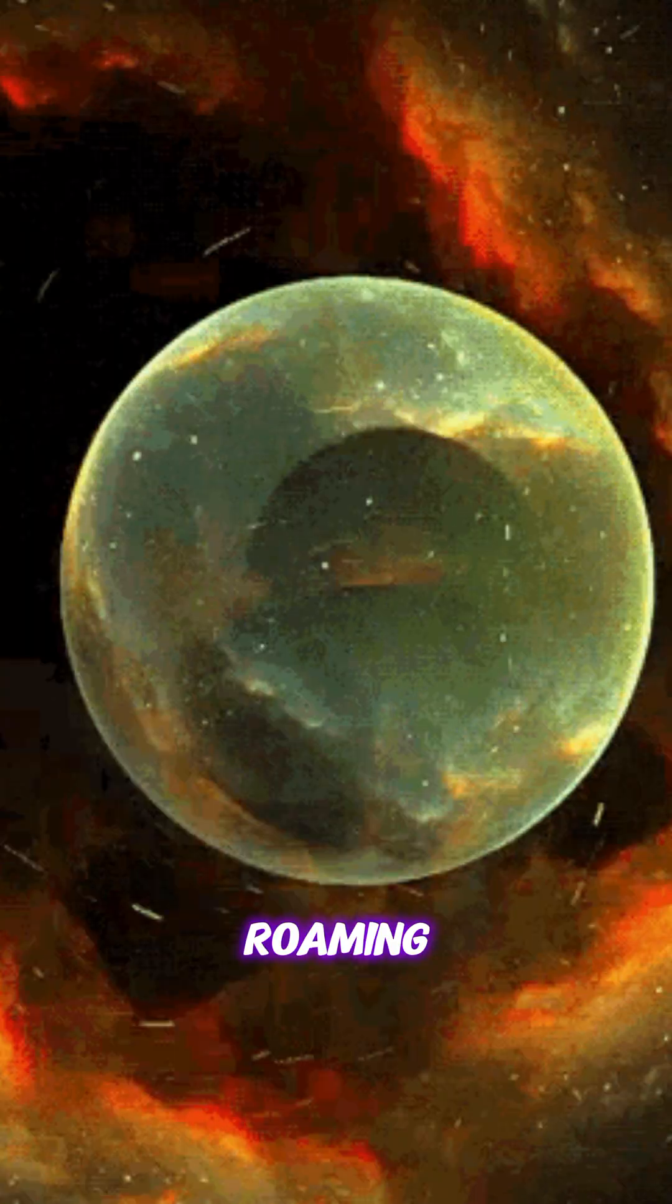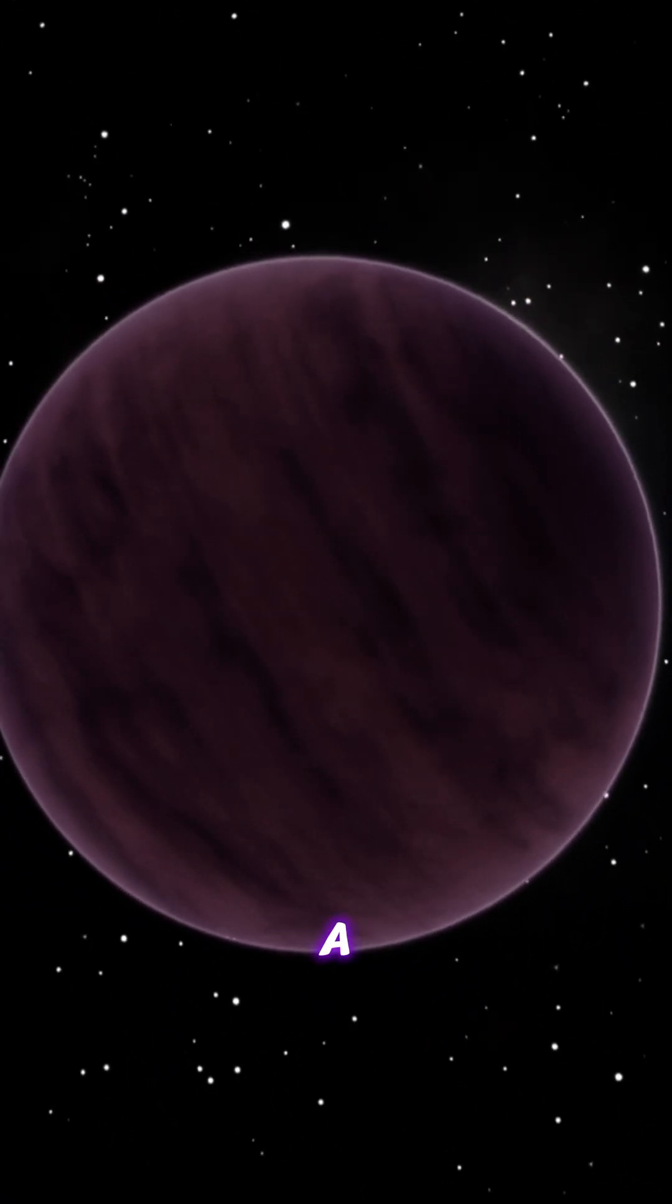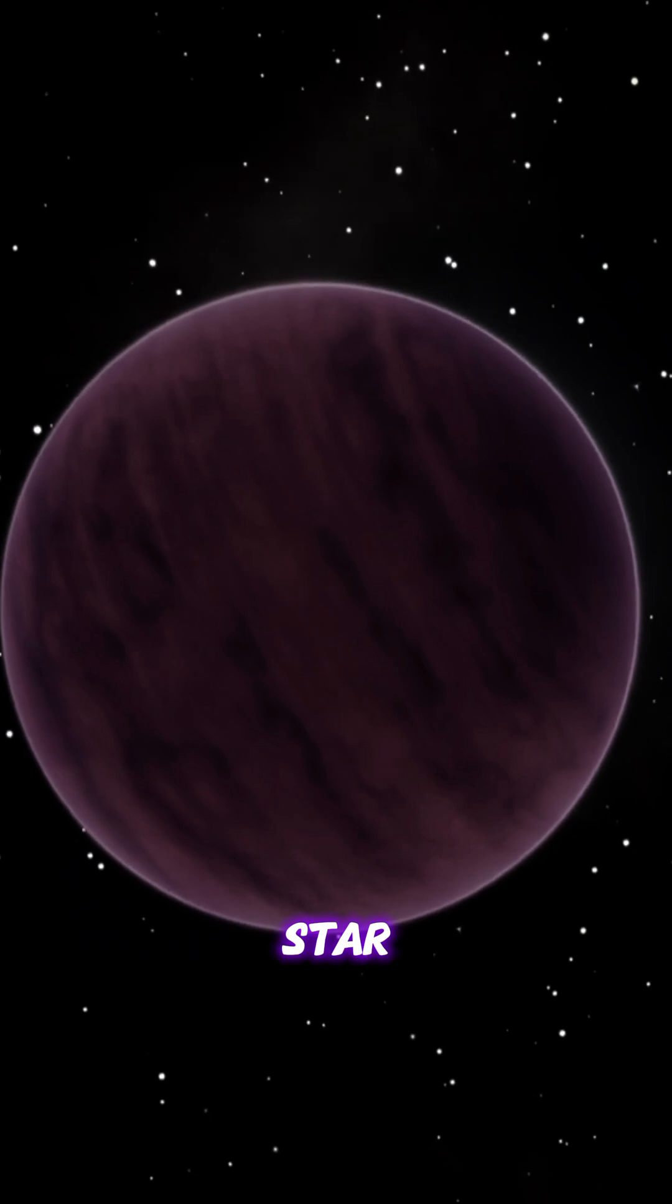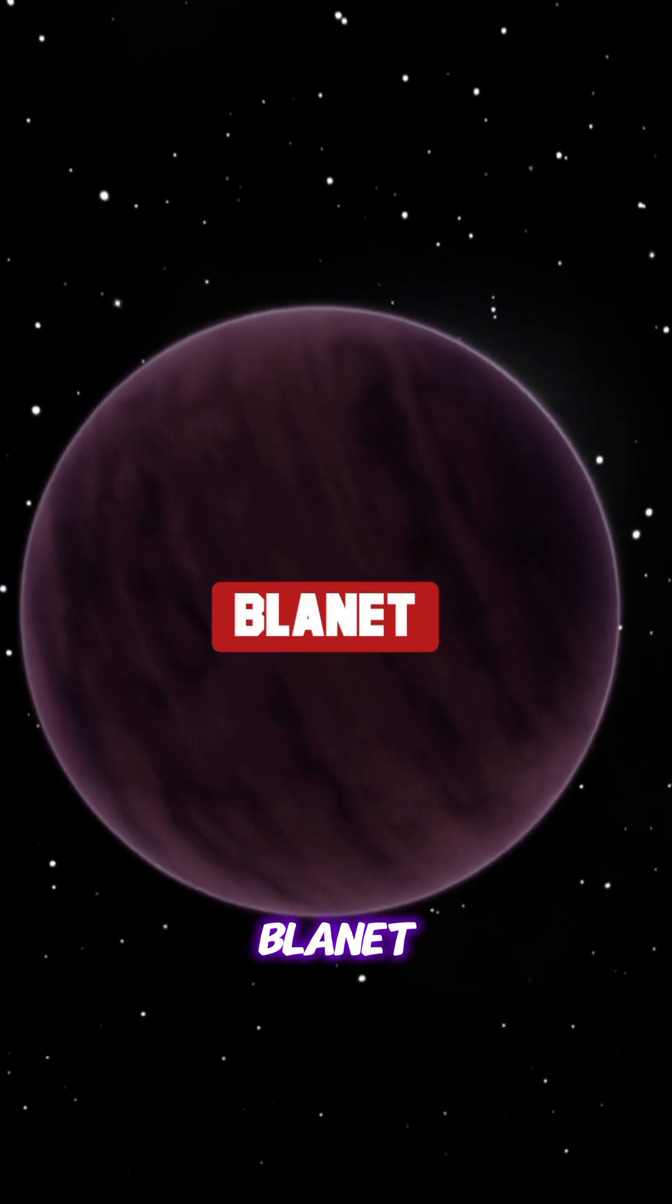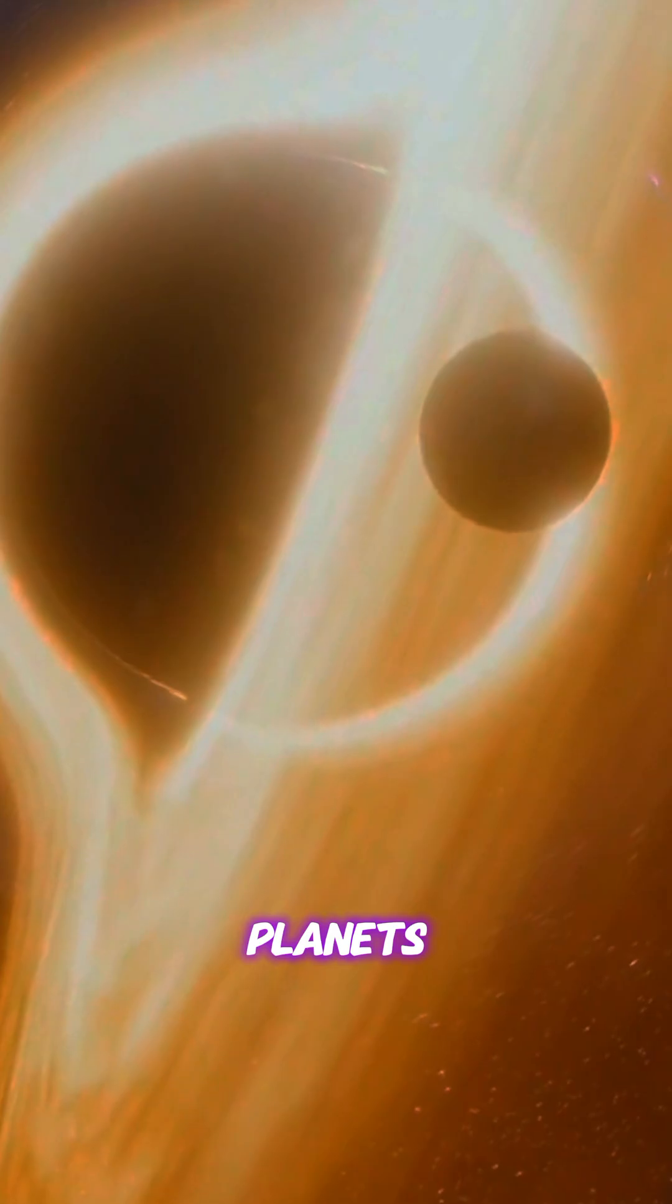When an object is roaming around a star, we call it a planet. But if a planet is rotating around a black hole, we will call it a blanet, not a planet. This is a hypothetical class of planets.